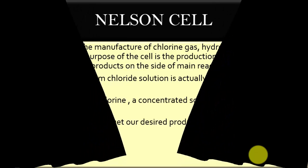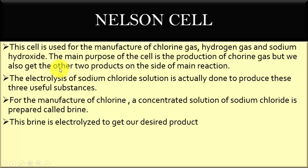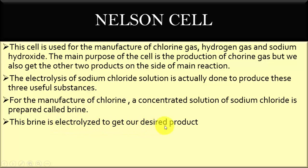Today we will discuss what is a Nelson cell. The Nelson cell is used for the manufacture of chlorine gas, hydrogen gas, and sodium hydroxide. The main purpose of the cell is the production of chlorine gas, but we also get the other two products alongside. The electrolysis of sodium chloride solution is done to produce these three useful substances. For the manufacture of chlorine, a concentrated solution of sodium chloride — called brine solution — is used, and the brine is electrolyzed to get chlorine gas.